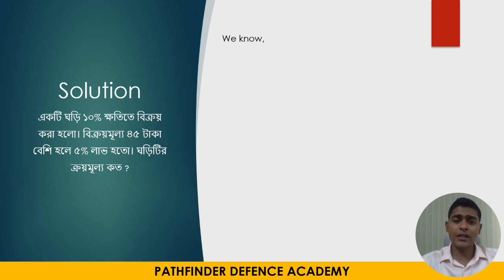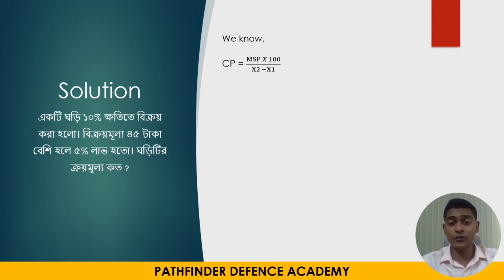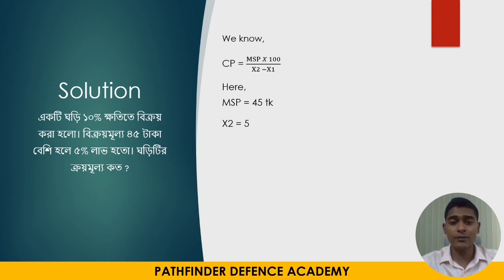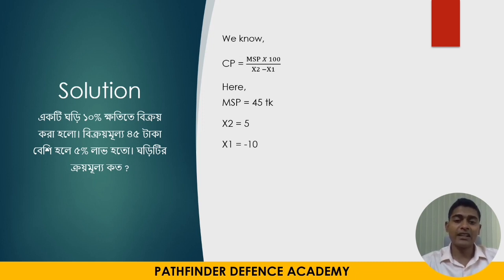So we know what x2 minus x1 is. So here, MSP equals x2. Then x2 means 5% — normally x2 is 5 and x1 equals 10. So CP equals 45 into 100 divided by x1 plus x2.